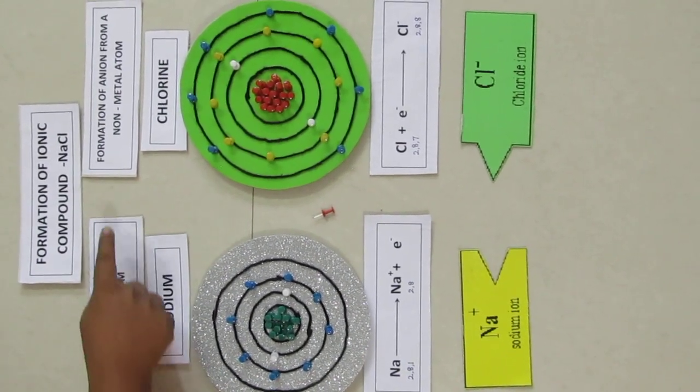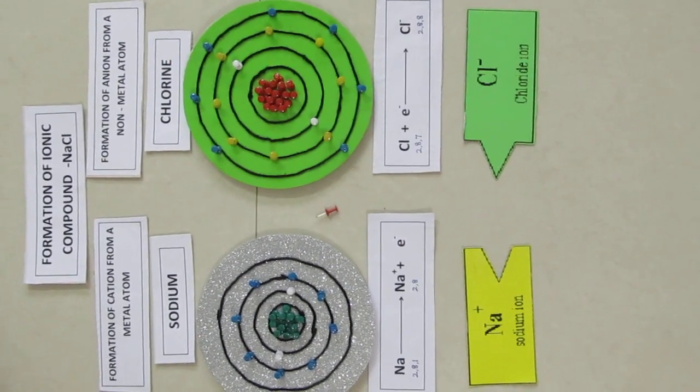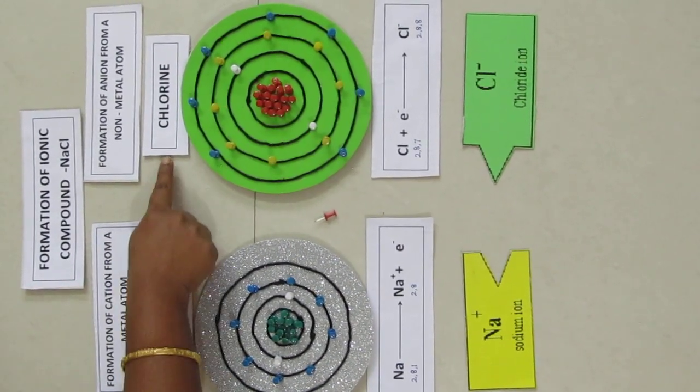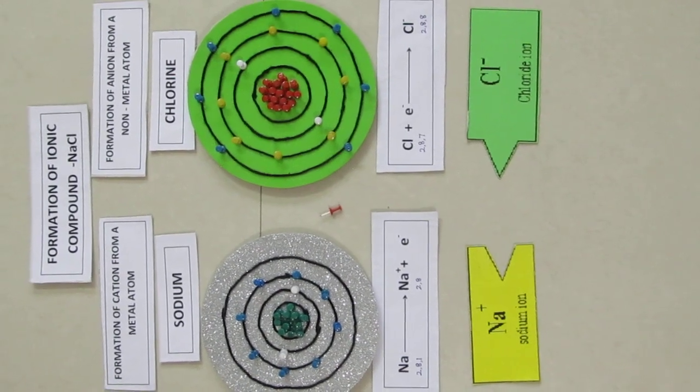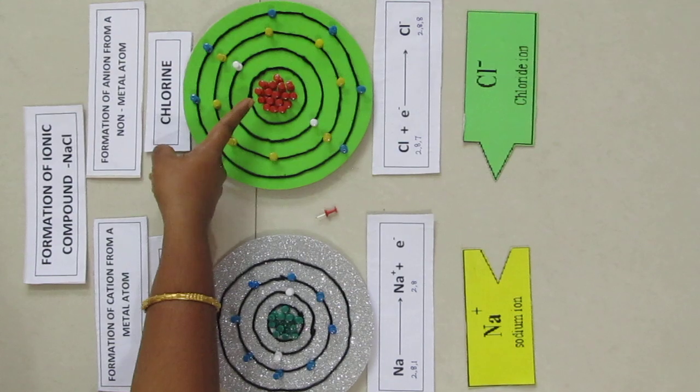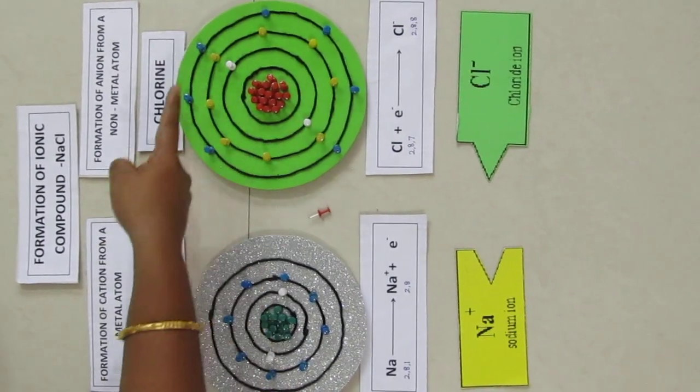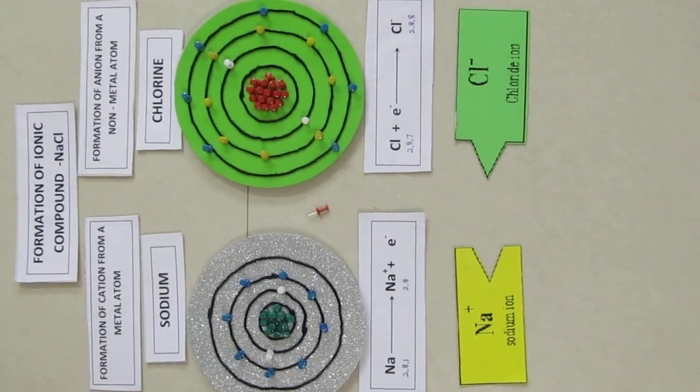Step 2: Formation of anion from a non-metal atom. We all know the atomic number of chlorine is 17. Chlorine has 17 positively charged protons inside the nucleus and 17 negatively charged electrons outside the nucleus.